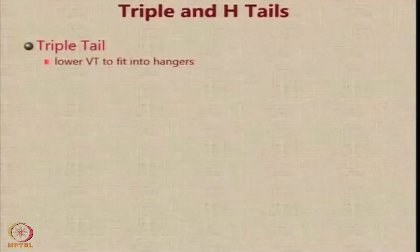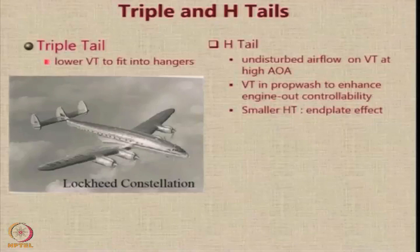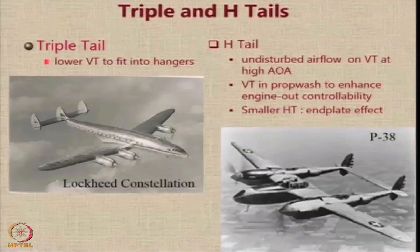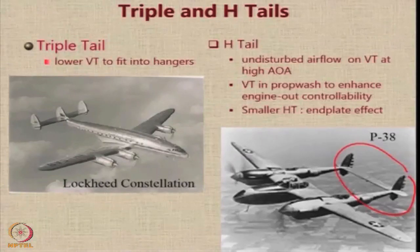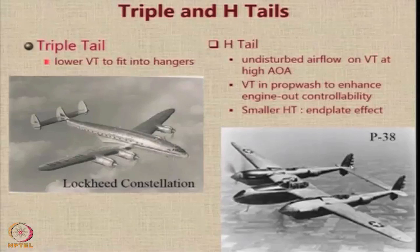We also have triple tail and H-tail configurations. The Lockheed Constellation is an example of a triple tail, driven by the requirement to fit the aircraft vertically into available hangars. The H-tail has undisturbed flow on the vertical tail at high angle of attack — the P-38 is an example. You move the vertical tail away from the wake of the engine, provide a double tail so the size can be smaller, and when the vertical tails are at the ends of the horizontal tail, they create an end plate effect, making the horizontal tail more efficient and smaller.